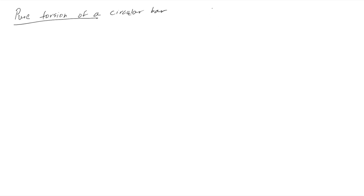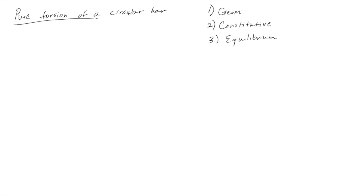Whenever we do a new application, we do three steps. The first one is we look at the geometry of the object, or the kinematics. This first step doesn't have anything to do with loads. Then we look at the constitutive behavior, which is the material, and then we look at equilibrium, which is how internal and external forces relate. We did this for a bar in tension and compression, and now we're going to do this for torsion.